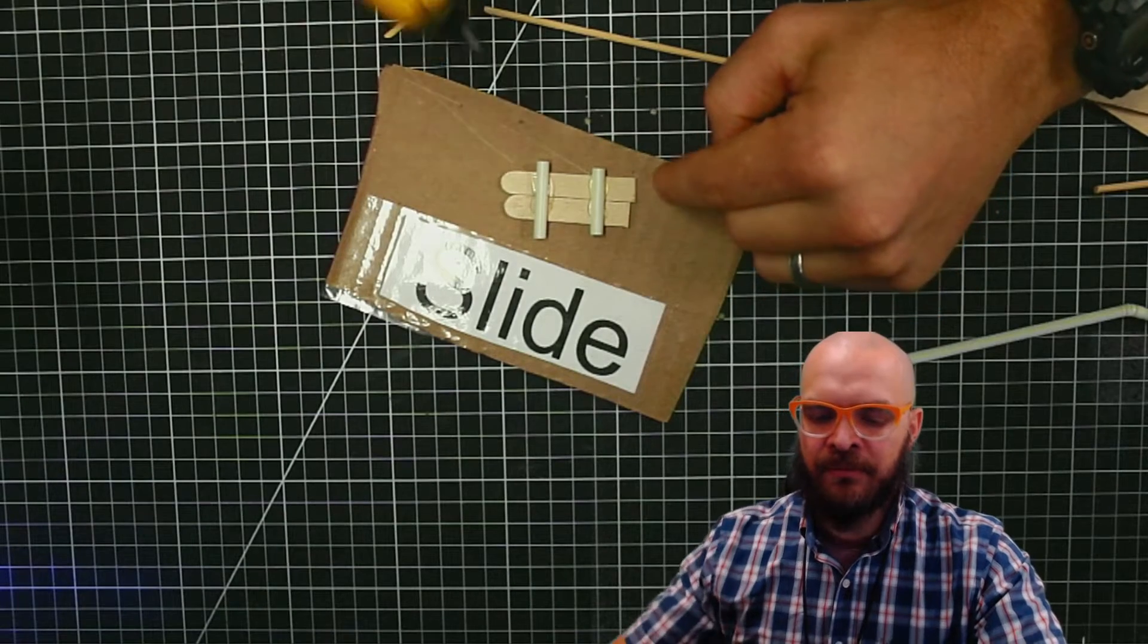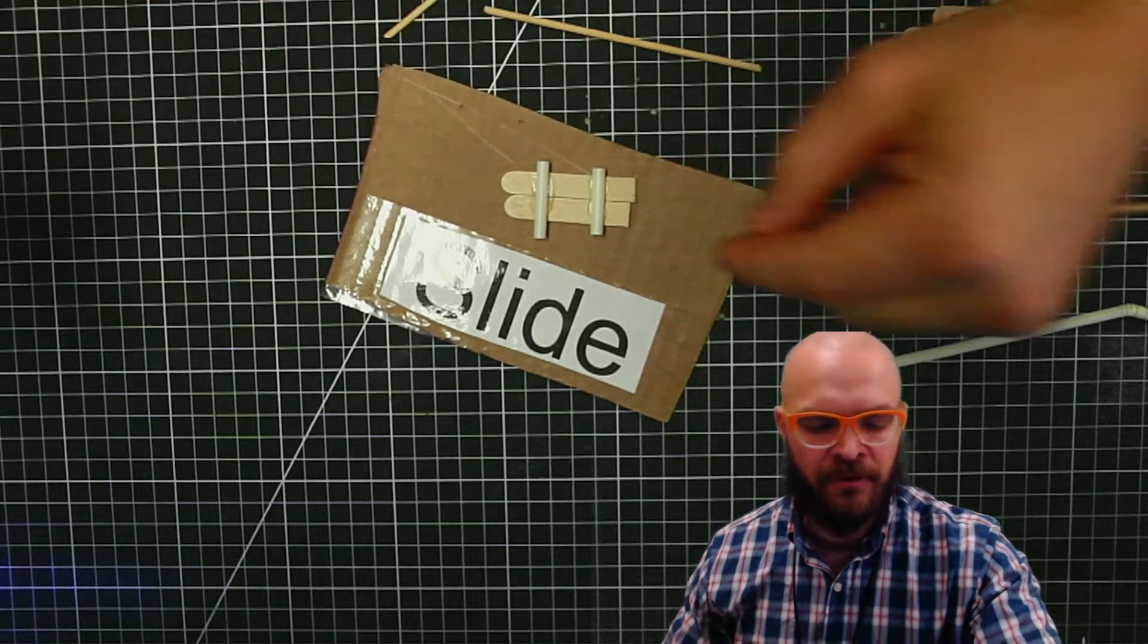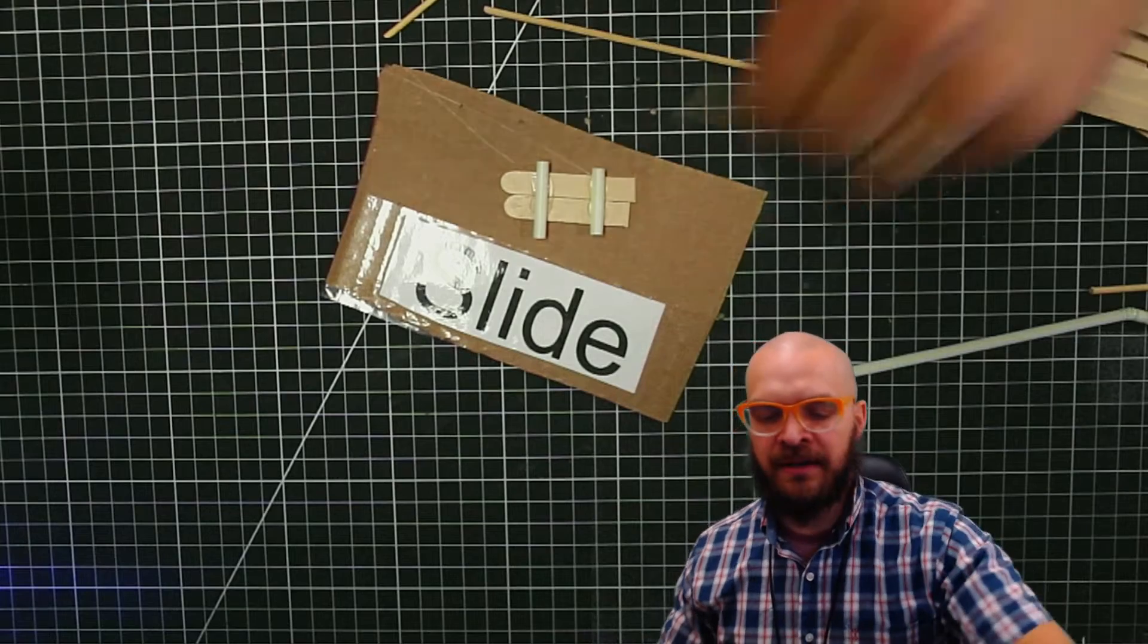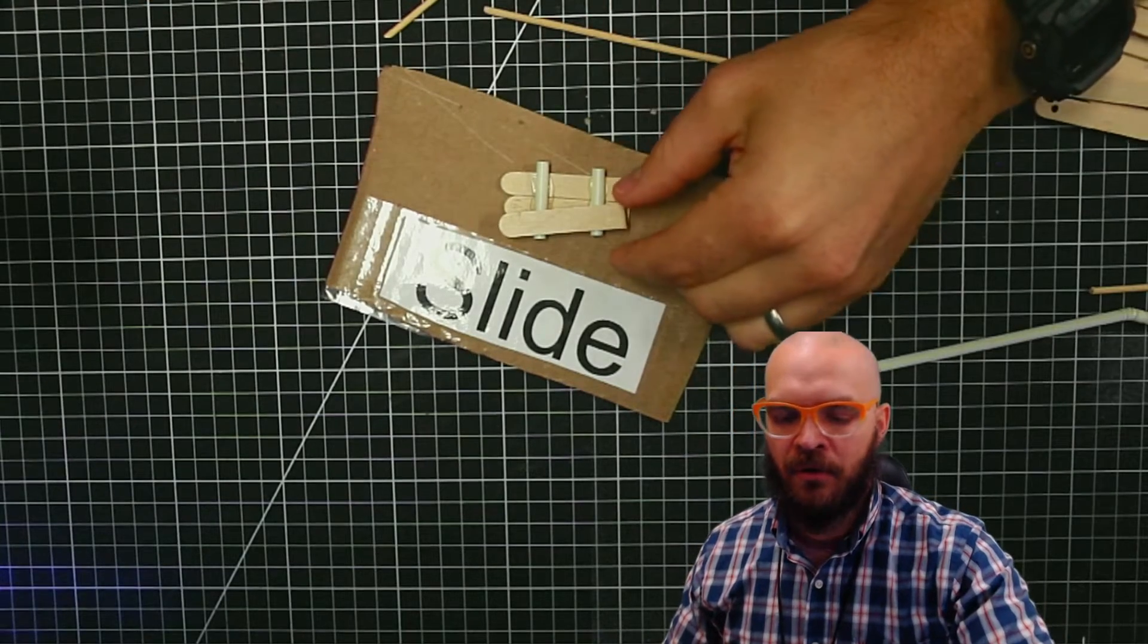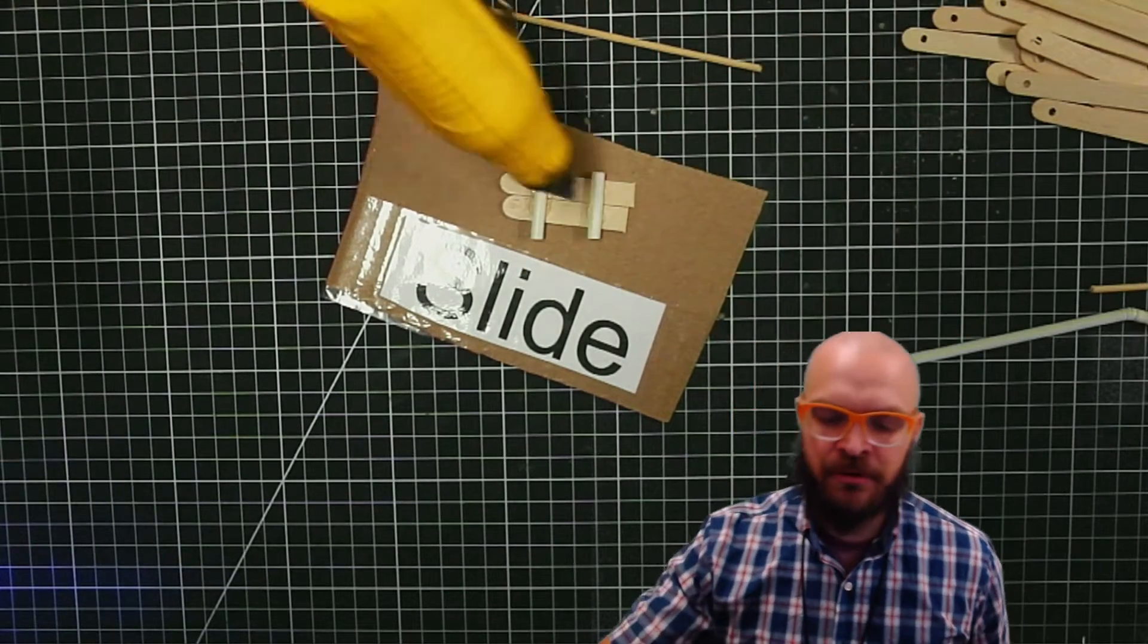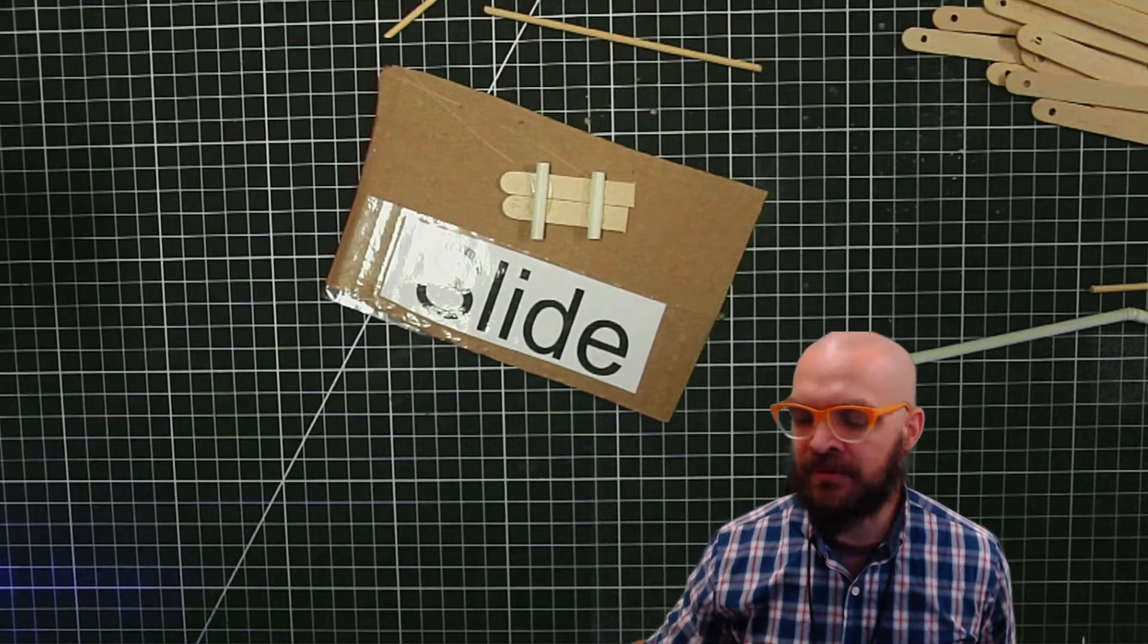But sometimes if I want to make something extra strong I might even glue a second popsicle stick on top, or I may put glue kind of like a bridge over the top because that glue gets pretty strong.